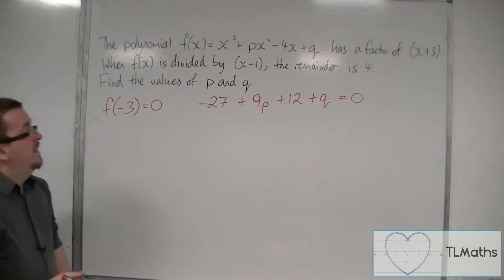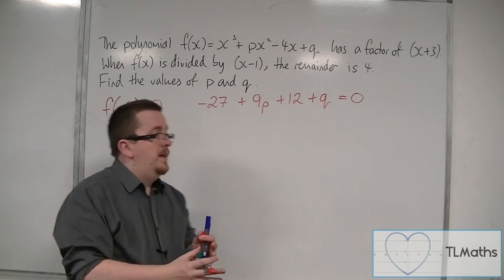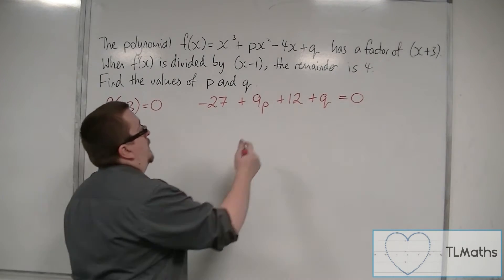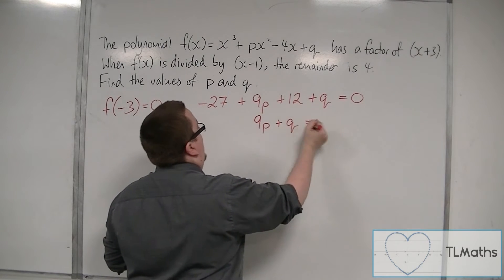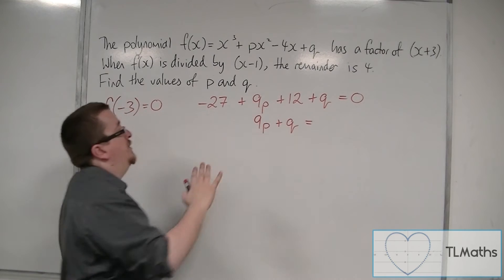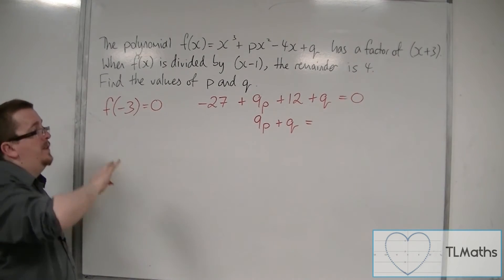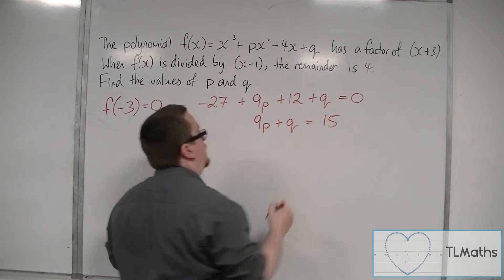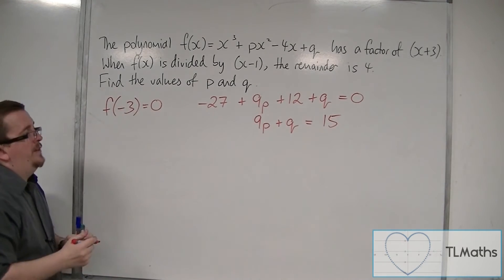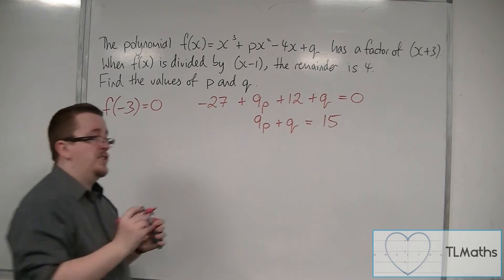So that is the first equation. Now I'm going to tidy this up so that we have 9p plus q, and I'm going to put minus 27 and 12 together, so minus 27 plus 12 will give me minus 15, and add the 15 to both sides. So move it over to the other side. So this gives me the first equation.